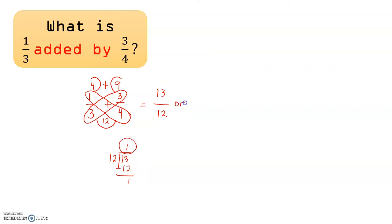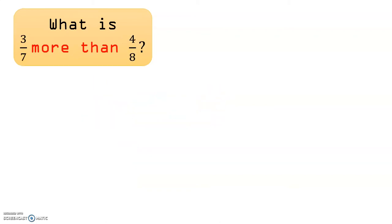This quotient here will be our whole number, and this remainder here will be our numerator, and the divisor will be our denominator. So the answer is 1 and 1/12, or 1/3 plus 3/4 is equal to 1 and 1/12. Now let's have another example.